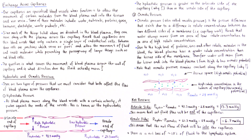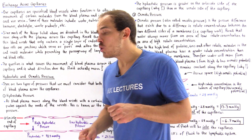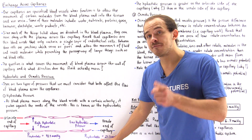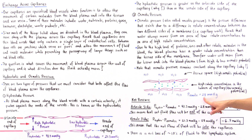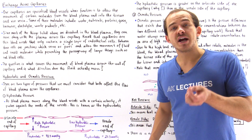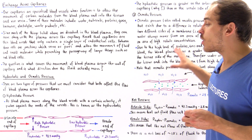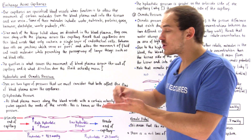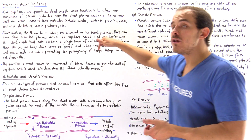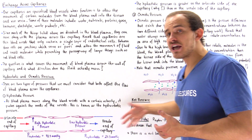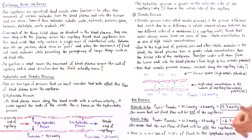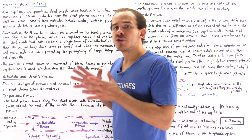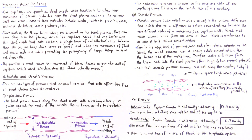Now on the venule side, we follow the same procedure, but the hydrostatic pressure is less. Because it's less than the osmotic pressure, when we take the sum we get negative 6.7 mmHg. Because it's negative, there will be a net fluid flow of blood plasma into the capillaries from the tissue. This is when waste products — for example, ammonia and carbon dioxide — flow into the blood plasma and ultimately travel to the kidneys and other organs responsible for excreting those waste byproducts.